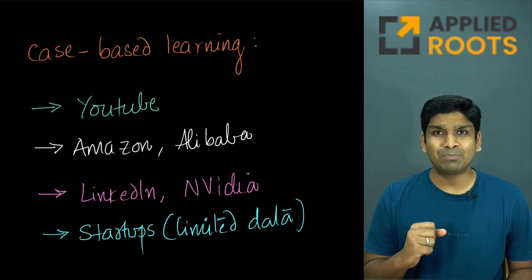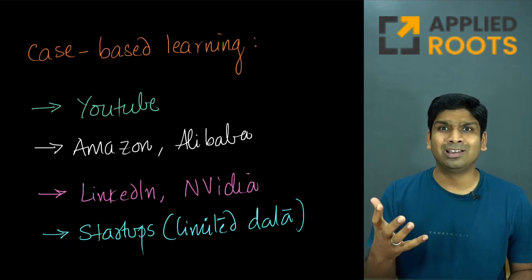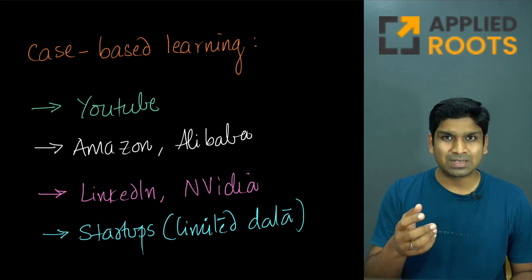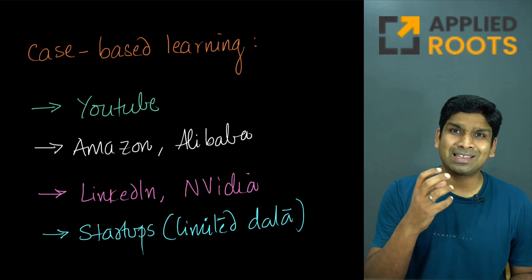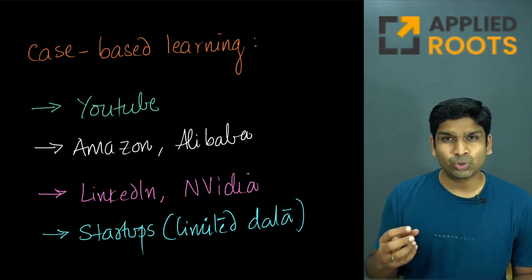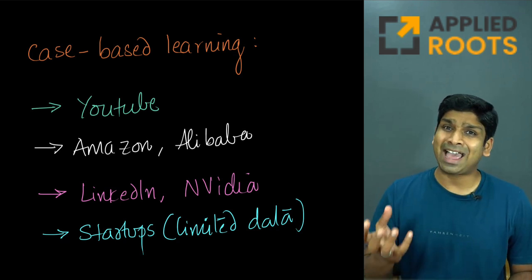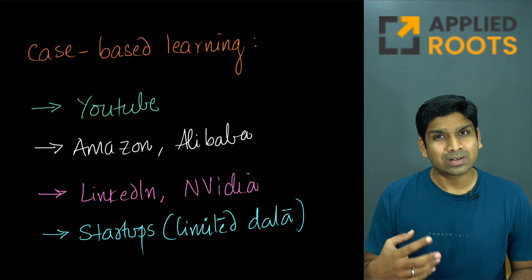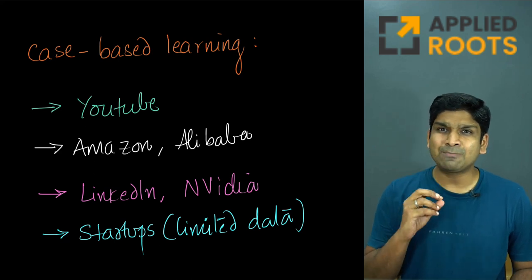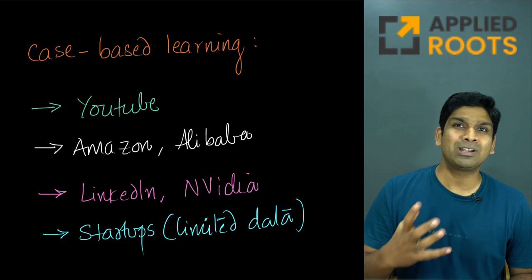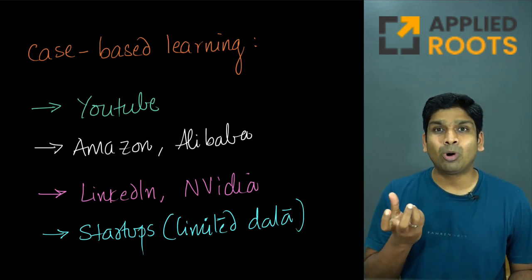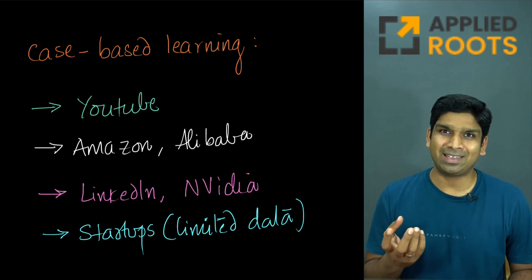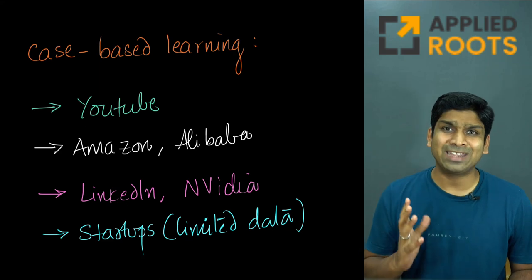We will take examples from companies like YouTube — a very popular set of algorithms and system design that YouTube specifically designed for their recommender systems. We will also take up examples from companies like Alibaba and Amazon, and some research work published by Nvidia and LinkedIn. In this mix we will also include a few startups based on their engineering blogs or research papers, because startups typically may not have as large a dataset as somebody like Alibaba or YouTube might have. So what innovative algorithms, architectures, and design choices can startups make, especially for this sort of problem where they may not have a lot of data to start with?